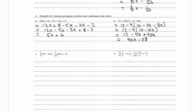In C we have 1/5 times (15 minus 3x) minus 1/10 times (10x plus 2). We distribute the 1/5 and the negative 1/10 first. 1/5 times 15 equals 3, minus 1/5 times 3x equals 3/5 x. Then negative 1/10 times 10x equals negative x, and negative 1/10 times 2 equals negative 2/10, which simplifies to negative 1/5.